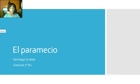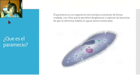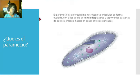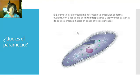Primero, ¿qué es el paramecio? Aquí tenemos una imagen del paramecio, aquí podemos ver algunas partes que ya explicaremos. El paramecio es un organismo microscópico unicelular de forma ovalada. Aquí en la imagen podemos ver cómo es su forma ovalada, tiene una forma como de un óvalo un poco deformado. Con cilios que permiten desplazarse — los cilios son estos pelitos, esos pelitos son los que le permiten poderse mover — y capturar las bacterias de que se alimentan. Habita en aguas dulces estancadas.